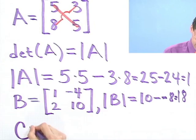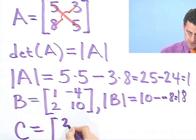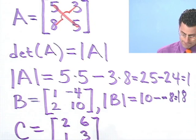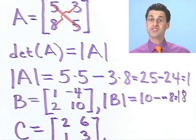One last example. C, suppose that's 2, 6, 1, 3. Why don't you give this a shot? See if you can find the determinant of this 2 by 2 matrix.